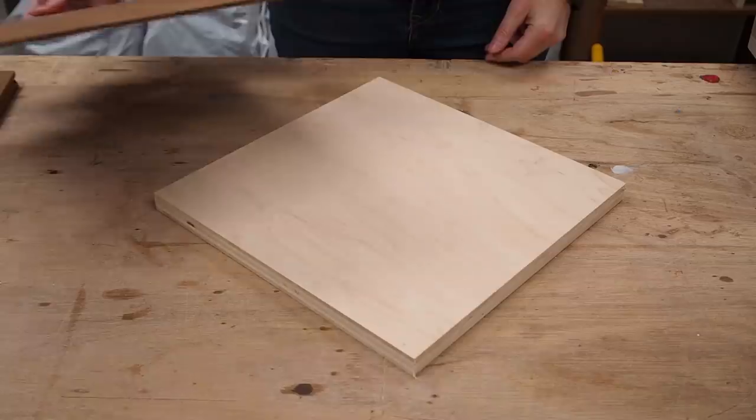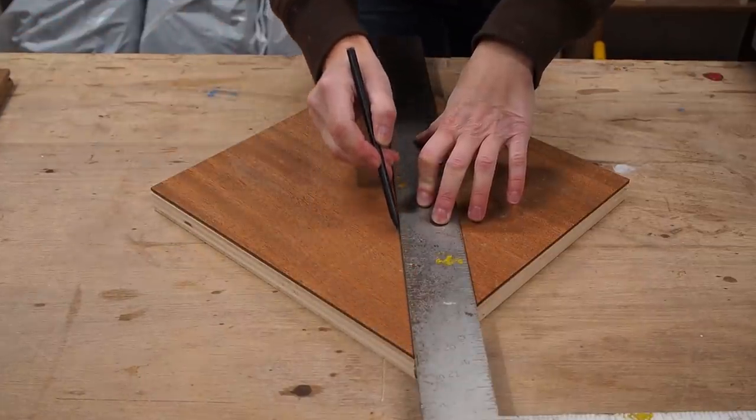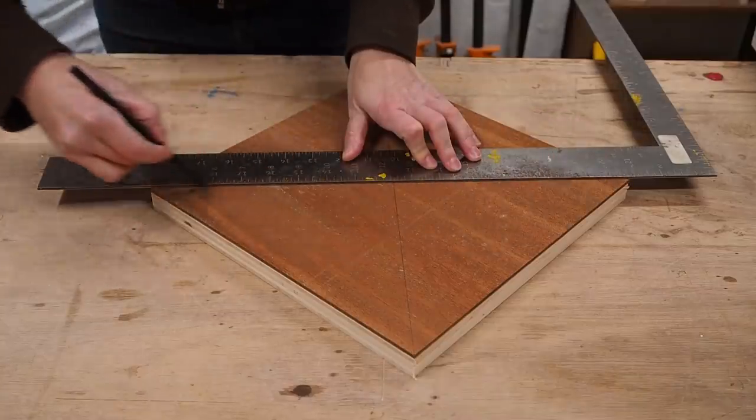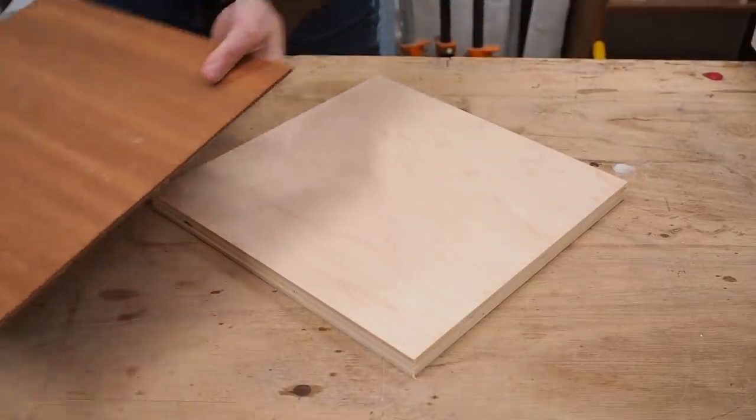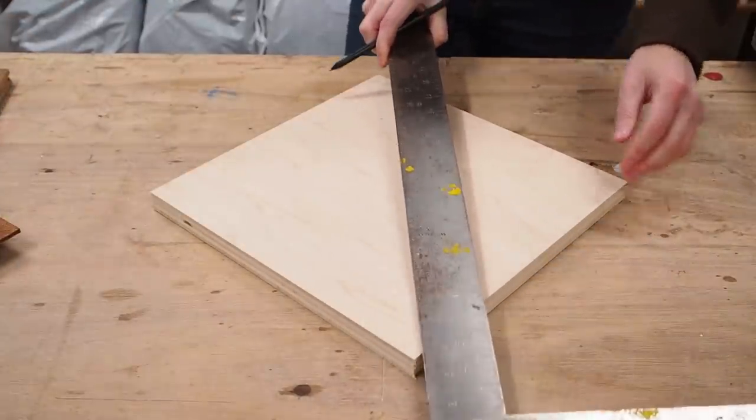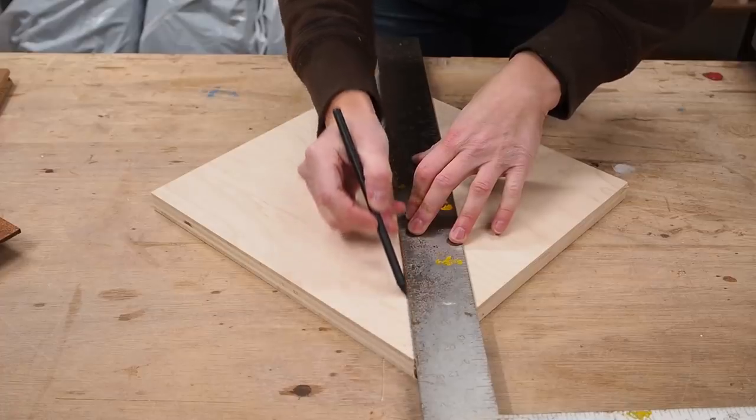All right, so moving on to the miter attachment, you'll need two identical squares, one from three quarter material and the other from one quarter material. I drew diagonal lines from one corner to the other on both pieces.